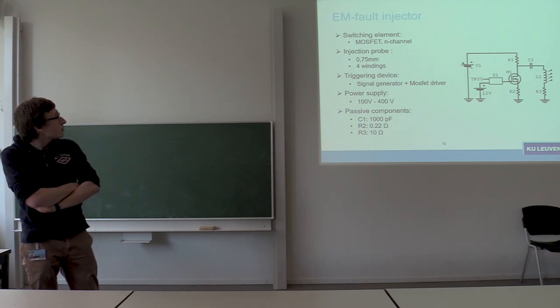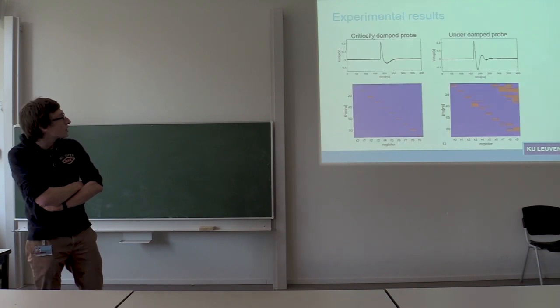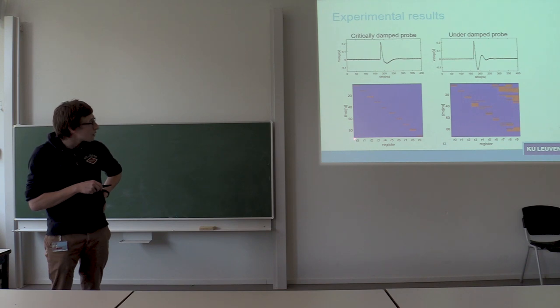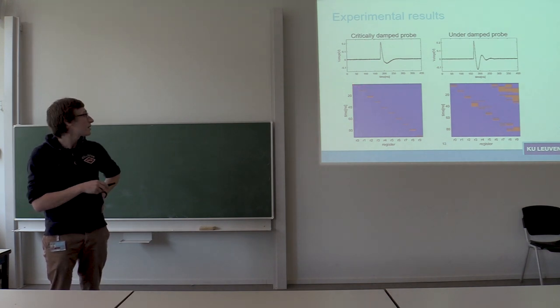All right, so this is the circuit that we used. We place it on top of the STM32 and then if we take a critically damped probe, we can see that we can nicely target individual writes to memory. So we can for instance, when we write our R0 back, if we shoot during the first 10 nanoseconds, we can just target that write back.